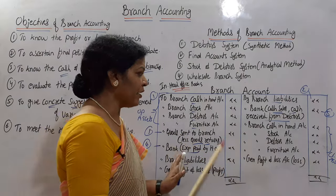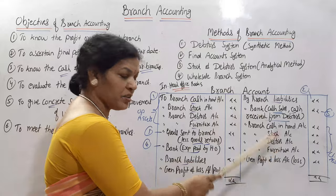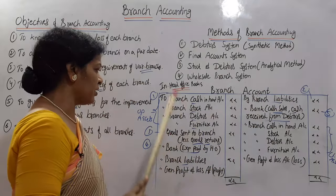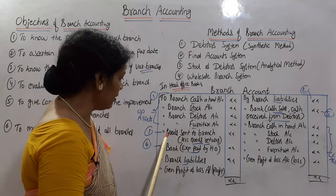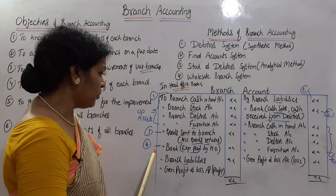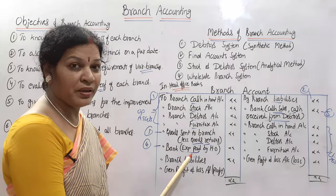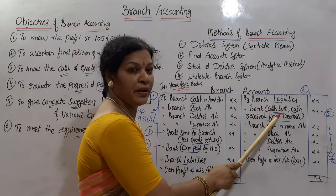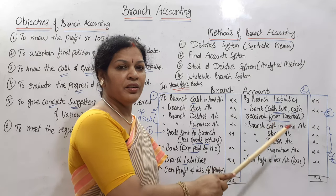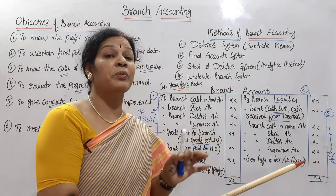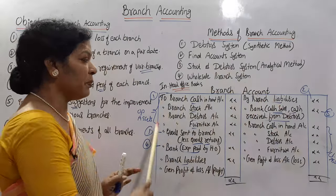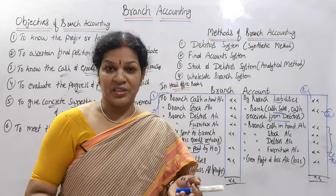So to summarize, there are only five entries in the branch account. One: opening assets on debit, closing assets on credit. Second: branch liabilities — opening and closing. Third: goods sent to branch, deducting any returns. Fourth: expenses paid by the head office — to bank. Fifth: by bank — cash sales and cash received from debtors. This is about the branch account proforma. In the next class, we will see practical problems.